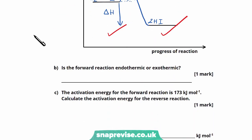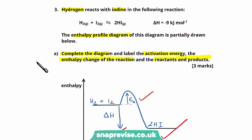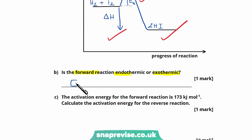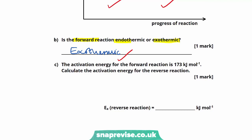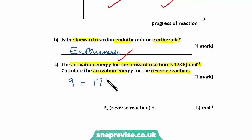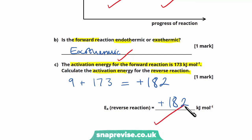Part B asks if the forward reaction is endothermic or exothermic. The forward reaction has an enthalpy of minus 9 kilojoules per mole, indicating it is exothermic. Part C: given that the activation energy for the forward reaction is 173 kilojoules per mole, we calculate the activation energy for the reverse reaction as the sum of the reaction enthalpy (9 kJ/mol) and the forward activation energy, giving 182 kilojoules per mole. In calculation questions, always show all your working so the examiner can follow and credit it even if the final answer is incorrect.